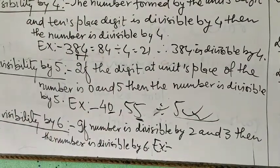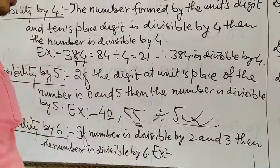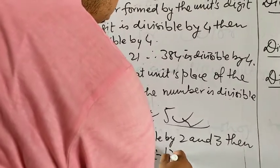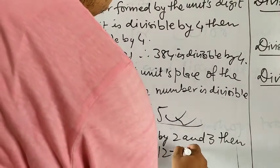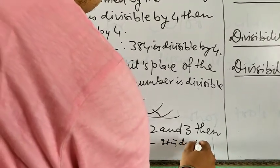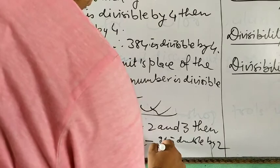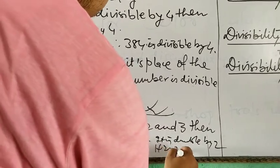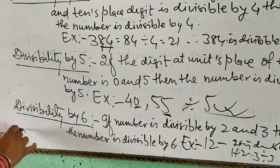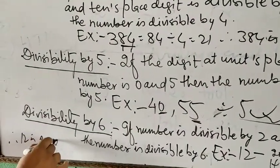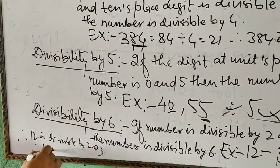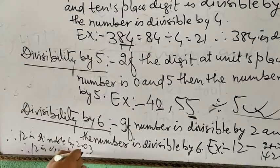Divisibility of 6: Any number which is divisible by 2 or 3, then the number is also divisible by 6. For example, 12: it is divisible by 2, and 1 plus 2 equals 3, divisible by 3. So 12 is divisible by 2 and 3, therefore 12 is divisible by 6.